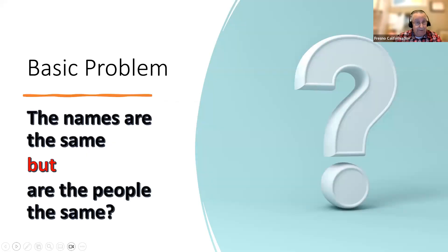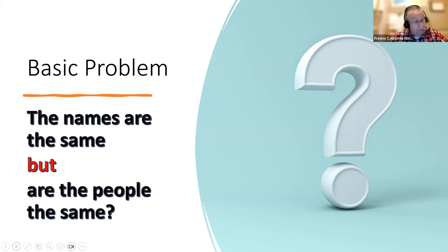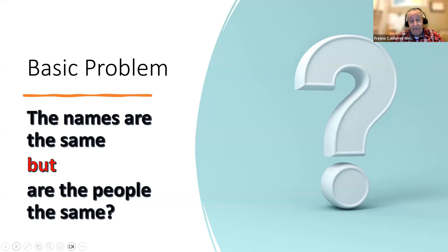The basic problem is that names for people you find will often be the right names, but the question will be: are they really the right people? There's more than one person on Earth with the same name as the person you're looking for. Sometimes there's many people with the same name. I was just doing that with a Wilson family in Philadelphia — I wanted a William Wilson and there were like a million William Wilsons. Other times you're working with an odd name and there's only one person with that name, but not very often.